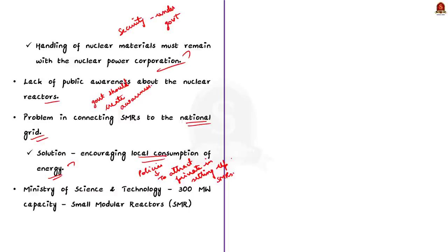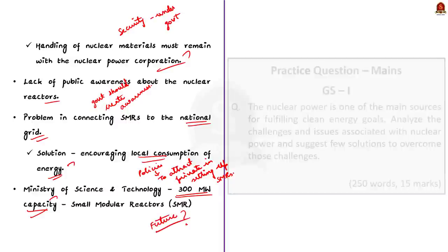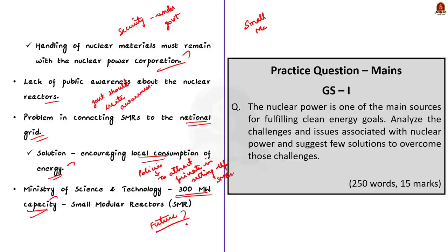If these challenges are addressed in time, SMRs can become a major contributor to India's decarbonization efforts and help achieve the net-zero emission goal by 2070. Recently, the Union Ministry of Science and Technology has taken steps for the development of SMRs with up to 300 MW capacity to fulfill the commitment to clean energy transition. This topic is very important for mains exam answers.